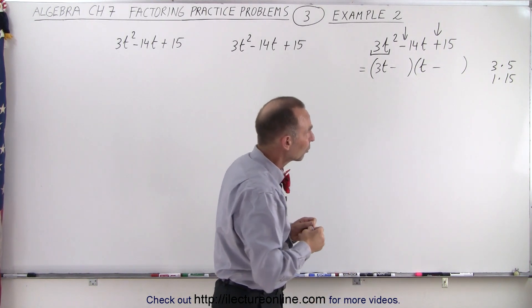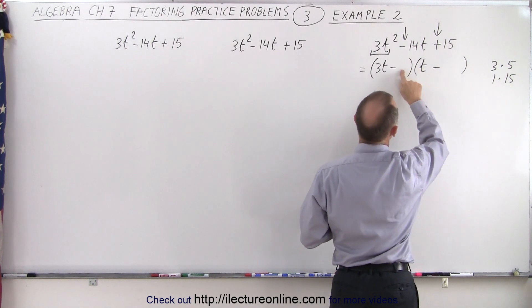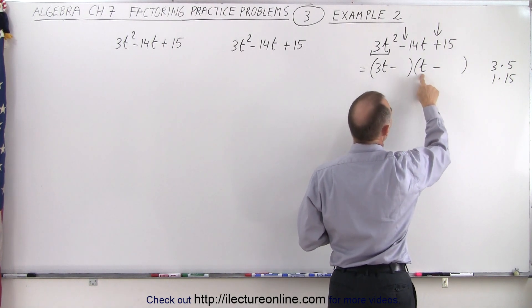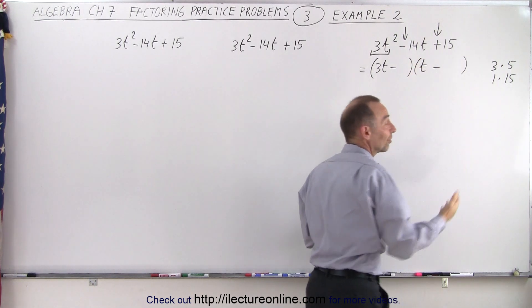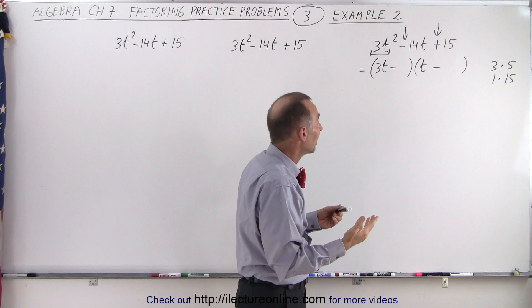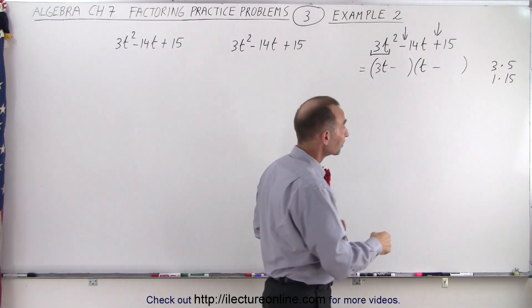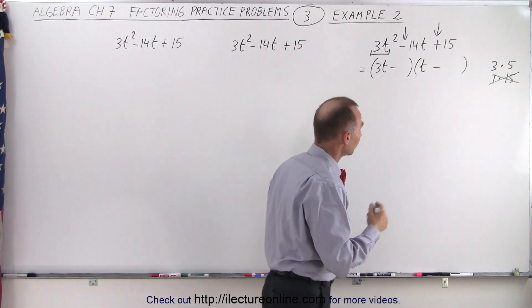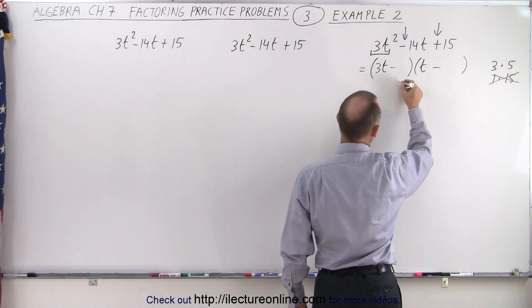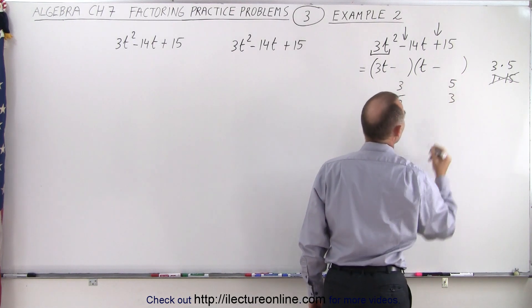Well first of all it's not going to be 1 and 15 because if we put down a 15 here, 15 times t already gives us 15t and then 1 times the 3 gives us another 3 that's minus 17 or minus 18 and so that's definitely too big. So we know it's not possible that this is the combination. So the only thing left is that we put a 3 there and a 5 there or a 5 here and a 3 there.